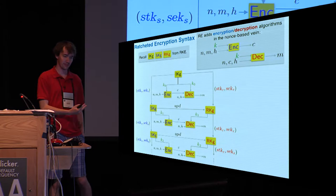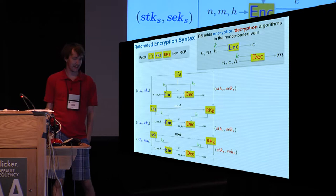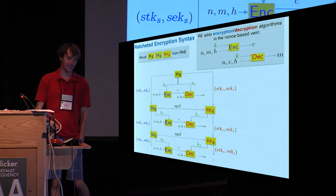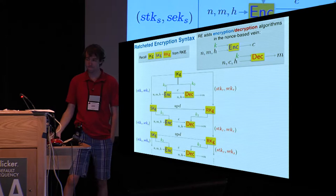So we showed these three algorithms for ratcheted key exchange. Ratcheted encryption has those three algorithms again and just augments them with encryption and decryption algorithms in a nonce-based vein. So how does it work there? Encryption takes in a key produced by sender key generation together with nonce message and header to produce the ciphertext. Then the decryption, given that ciphertext and nonce and header, and the key from receiver key generation decrypts and obtains back that underlying message.